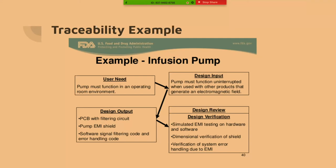One user need can branch off into multiple design inputs, which could lead to multiple design outputs. You can see a design input here that has three different outputs. All those outputs are there to meet those original user needs — if you look at them, they connect back to that original requirement.